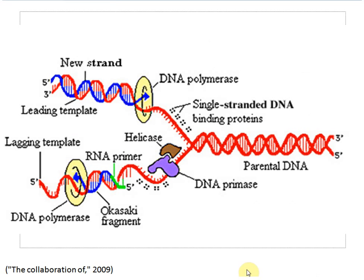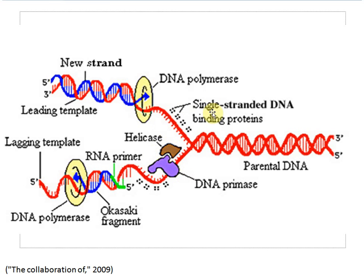Here's another diagram of replication showing helicase — labeled 'DNA primase' on this picture, which appears to be a typo. The leading strand is on top, the lagging strand on the bottom, synthesized in opposite directions. This diagram also introduces single-stranded binding proteins, which prevent the separated DNA strands from re-annealing to themselves. They hold the strands apart until DNA polymerase can line up new DNA against them.